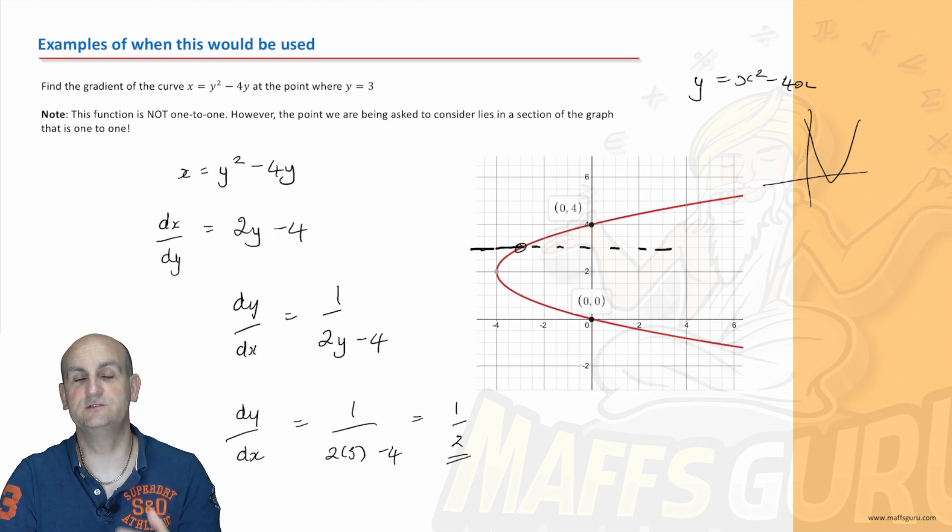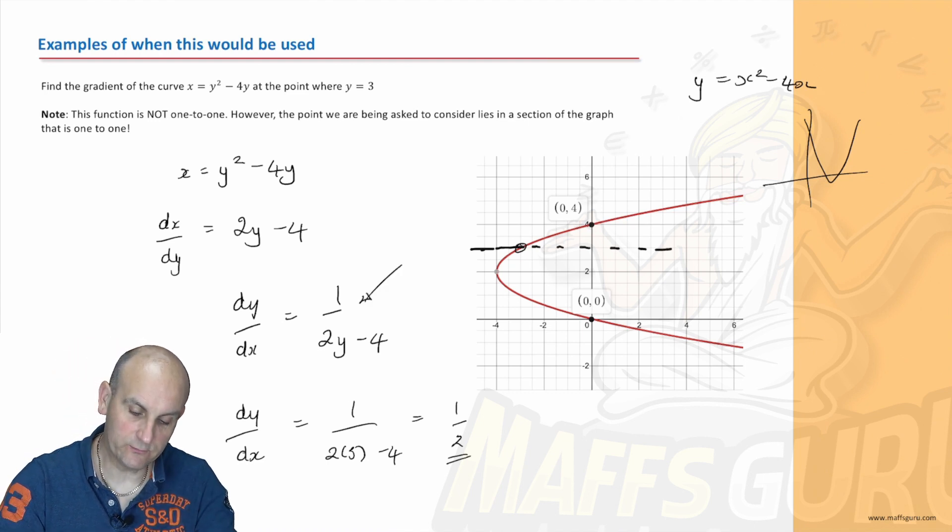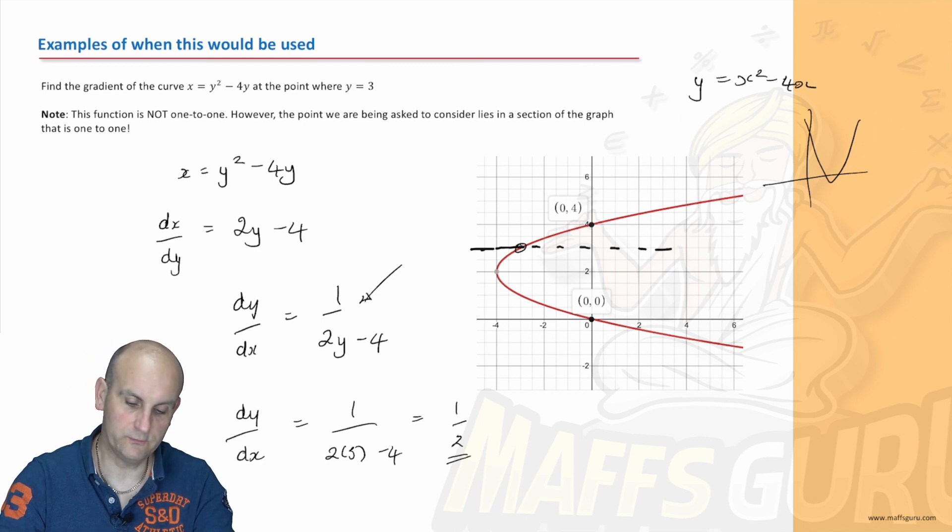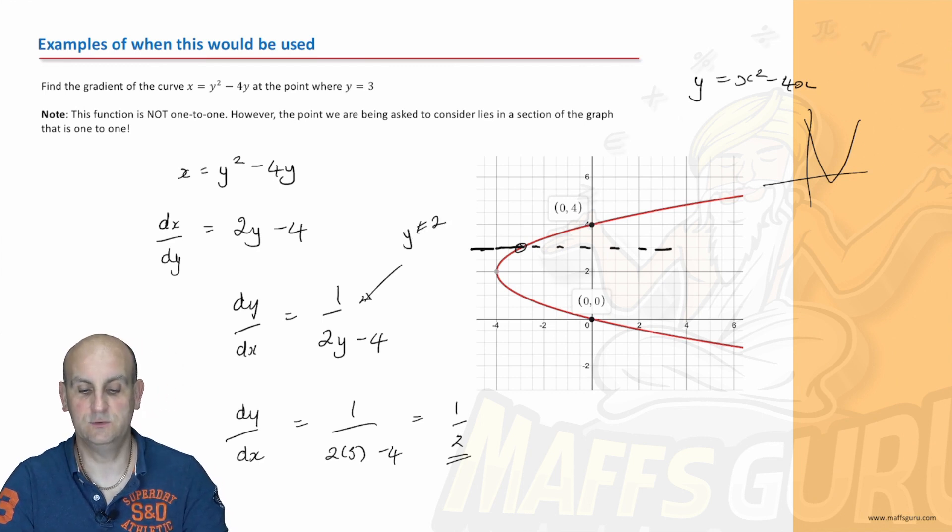Now, when we do these particular functions, it's really important to look at any values that might not be allowed. And what we notice is here with this one, we've got 2y minus 4. So the bottom of that graph or that function could not be equal to zero. And so y could not be equal to 2. So that is defined for all values except y equals 2. Understand what we're doing so far? Again, nice and easy in that situation.